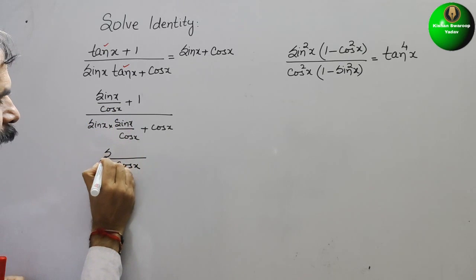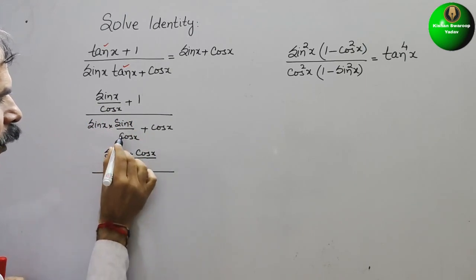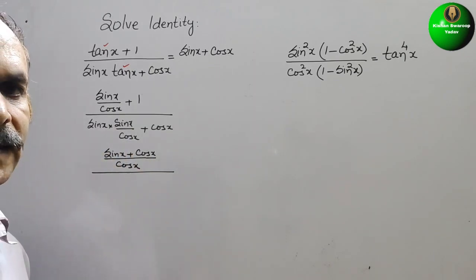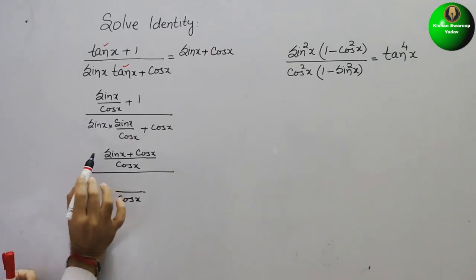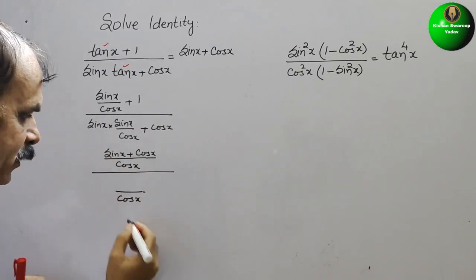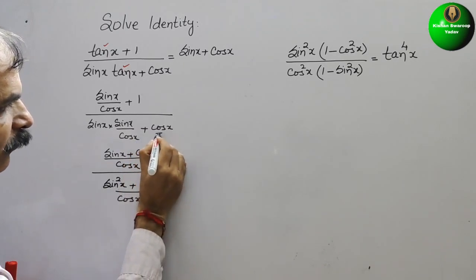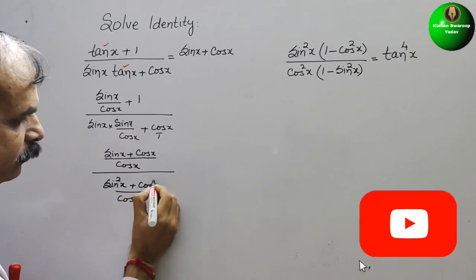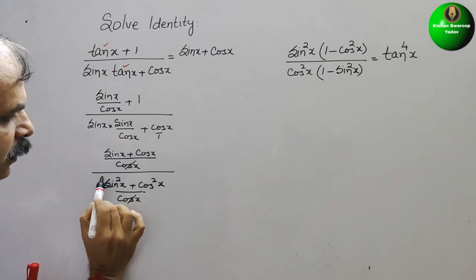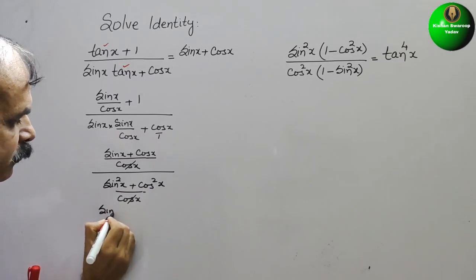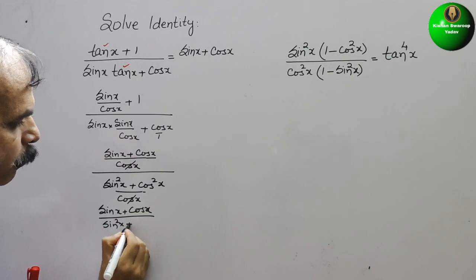So here we will get sin x plus cos x. Here also we will take the same thing — cos x is LCM. So here sin x into sin x is sin square x, plus cos x. The LCM is cos x, therefore we will get cos square x. So this cos x and this cos x will cancel out. We will get sin x plus cos x by sin square x plus cos square x.